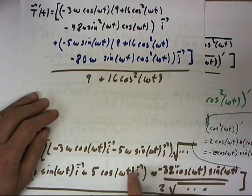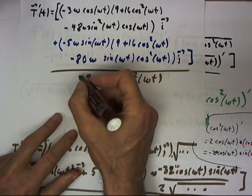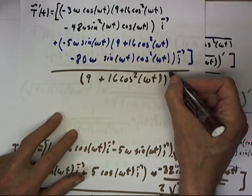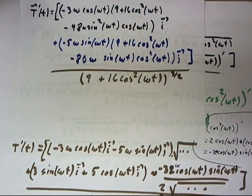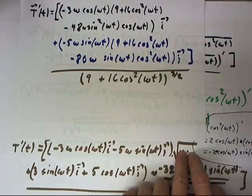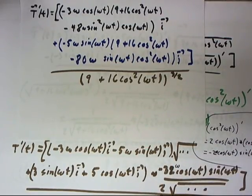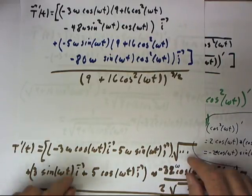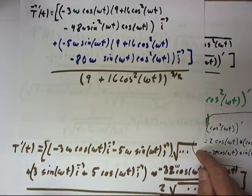And I'm simply going to observe two things. First, I've multiplied through both numerator and denominator by this square root. Multiplying the denominator through the square root, I get the square root times the square root here. Remember, this is the square root of 9 plus 16 cosine squared of omega t, so that the square root here just becomes a factor, 9 plus 16 omega squared t.